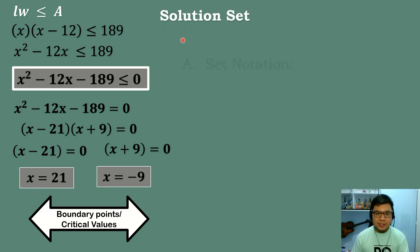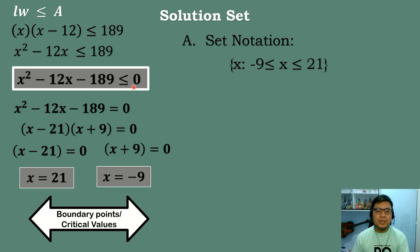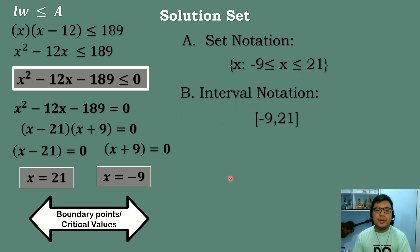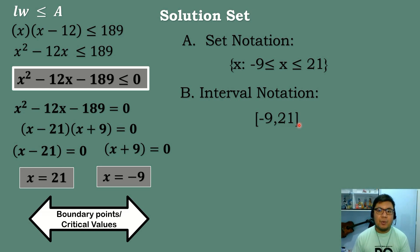Now let's create the solution set. Since our inequality symbol is less than or equal to, the critical values are included in the solution set. In set notation: x such that negative 9 is less than or equal to x which is less than or equal to 21. In interval notation, the values range from negative 9 to 21, inclusive. So all numbers from negative 9 to 21 are possible solutions.